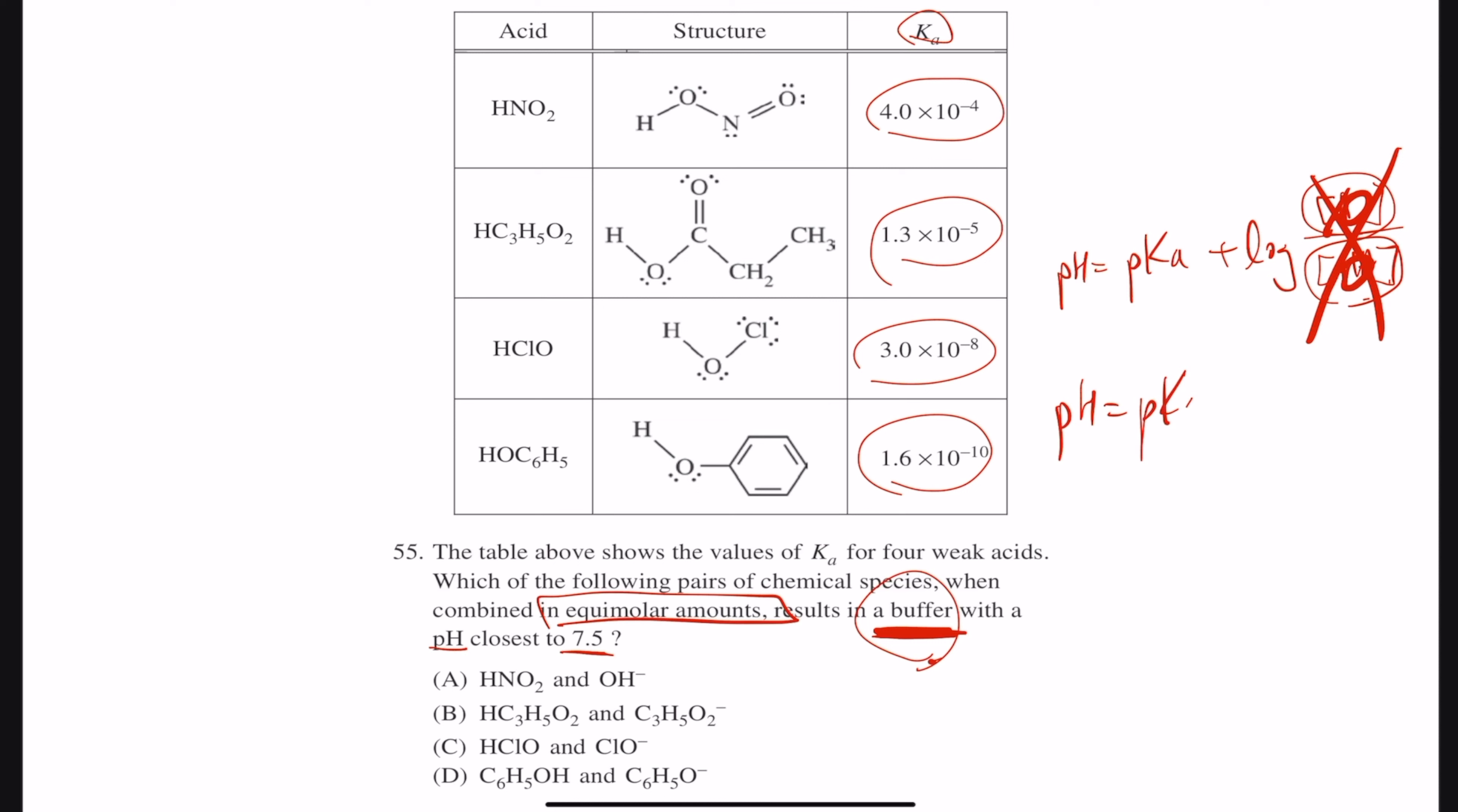So pH is equal to pKa plus log of 1. What's log of 1? It's 0, so that just goes away. pH is basically equal to pKa.